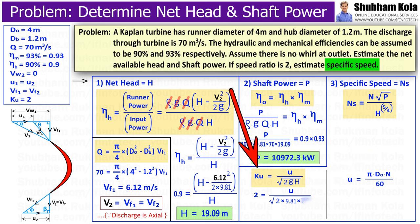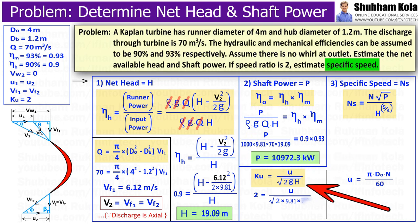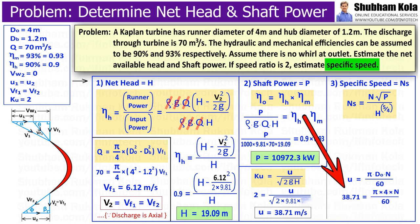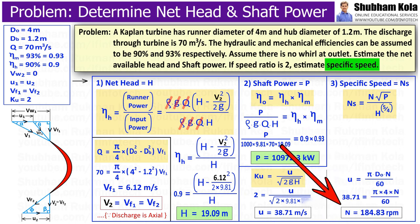The speed ratio equals u divided by √(2gH). Therefore, we calculate u as 38.71 meters per second. From this calculated value of u, we get the rotational speed of the turbine N equal to 184.83 rpm.